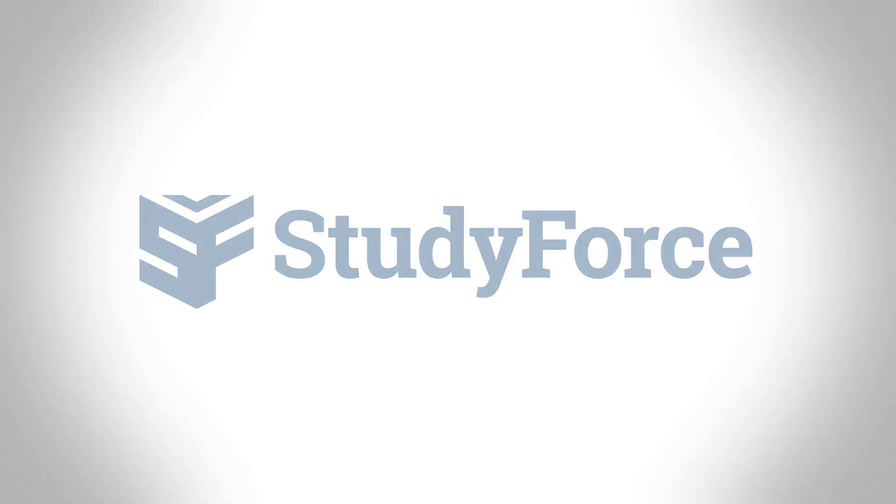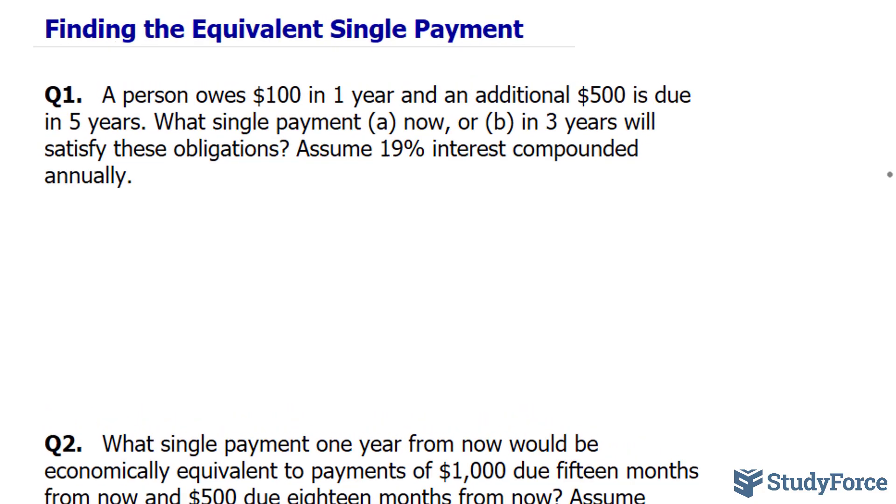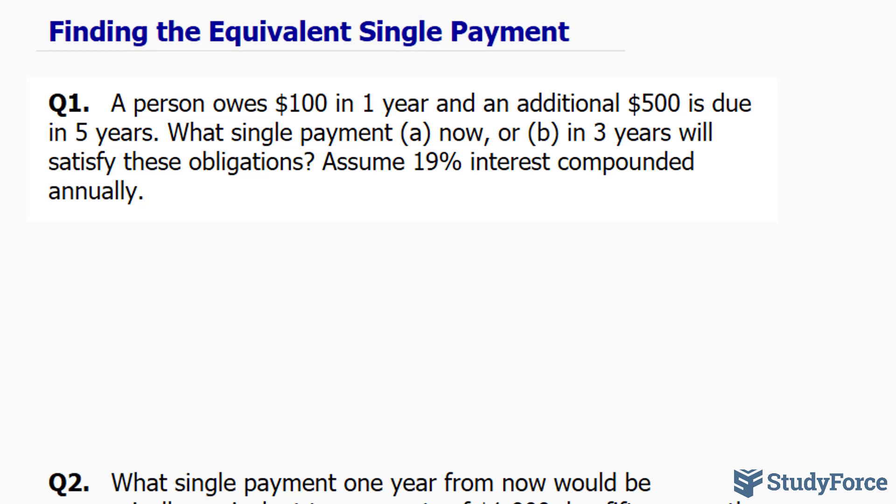In this video, we'll look at the concept of finding an equivalent single payment to replace two or more cash flows. Let's begin with example one. A person owes $100 in one year and an additional $500 is due in five years. What single payment A now, or B in three years, will satisfy these obligations? Assume 19% interest compounded annually.